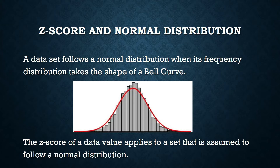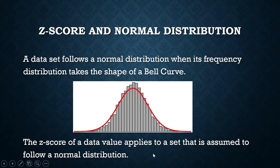What again is a normal distribution? If you were to produce a histogram — the histogram is the frequency distribution of your data set — and the histogram looks something like almost a perfect bell curve, then your data set has a normal distribution. We are applying the Z-scores only to a data set which we assume to have a normal distribution.